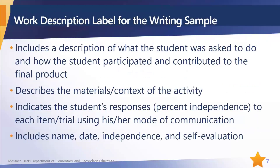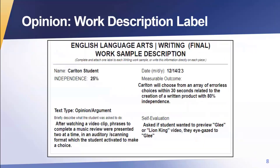Let's take a look at the work descriptor label. It includes a description of what the student was asked to do and how the student participated and contributed to the final product. It describes the materials and the context of the activity. It indicates the student's responses, noting the level of independence for each item or trial using their mode of communication, which was included as part of the measurable outcome. It also includes the name, date, independence, and self-evaluation.